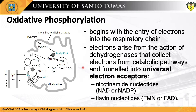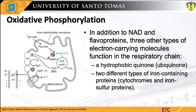Oxidative phosphorylation begins with the entry of electrons into the respiratory chain. Most of these electrons arise from dehydrogenases that collect electrons from catabolic pathways and funnel them into universal electron acceptors: nicotinamide nucleotides (NAD or NADP) or flavin nucleotides (FMN or FAD). In addition to NAD and flavoproteins, three other types of electron-carrying molecules function in the respiratory chain: ubiquinone, cytochromes, and iron-sulfur proteins.